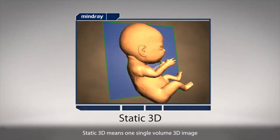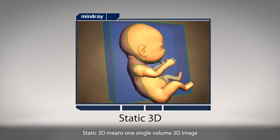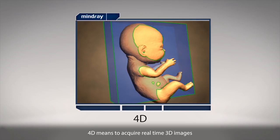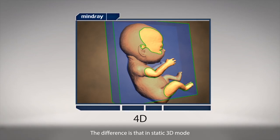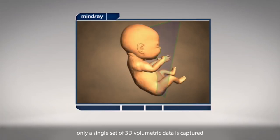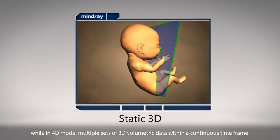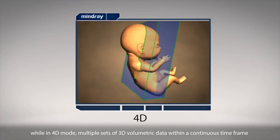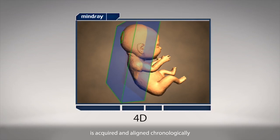Static 3D means one single volume 3D image. 4D means to acquire real-time 3D images. The difference is that in static 3D mode, only a single set of 3D volumetric data is captured, while in 4D mode, multiple sets of 3D volumetric data within a continuous timeframe is acquired and aligned chronologically.